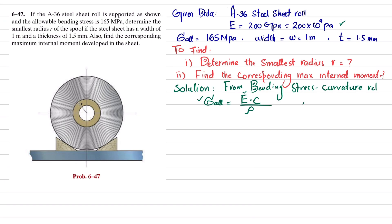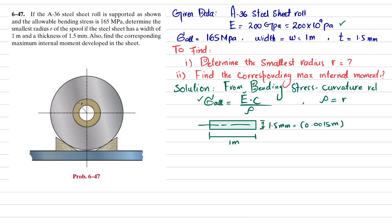Here ρ is equal to radius r. The section of the steel sheet has width 1 meter and thickness 1.5 millimeter, which converts to 0.0015 meter. So c is the distance from the mid-plane to the top or bottom, giving c = 0.0015 / 2 = 0.75 millimeter.